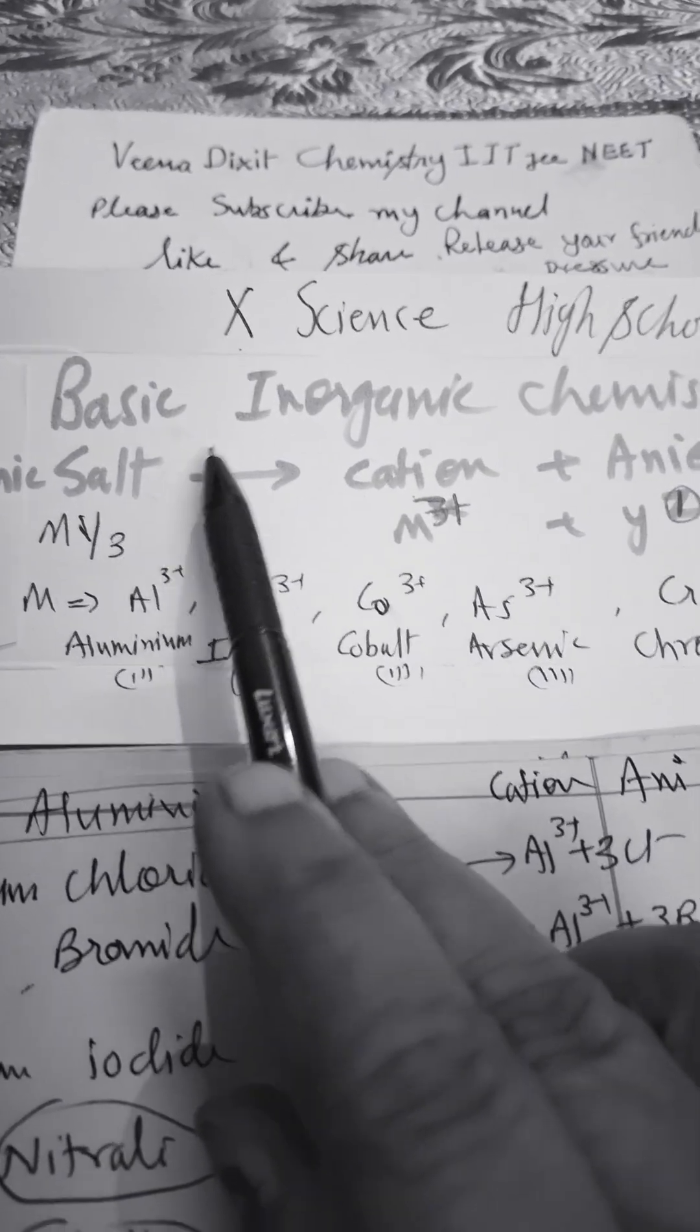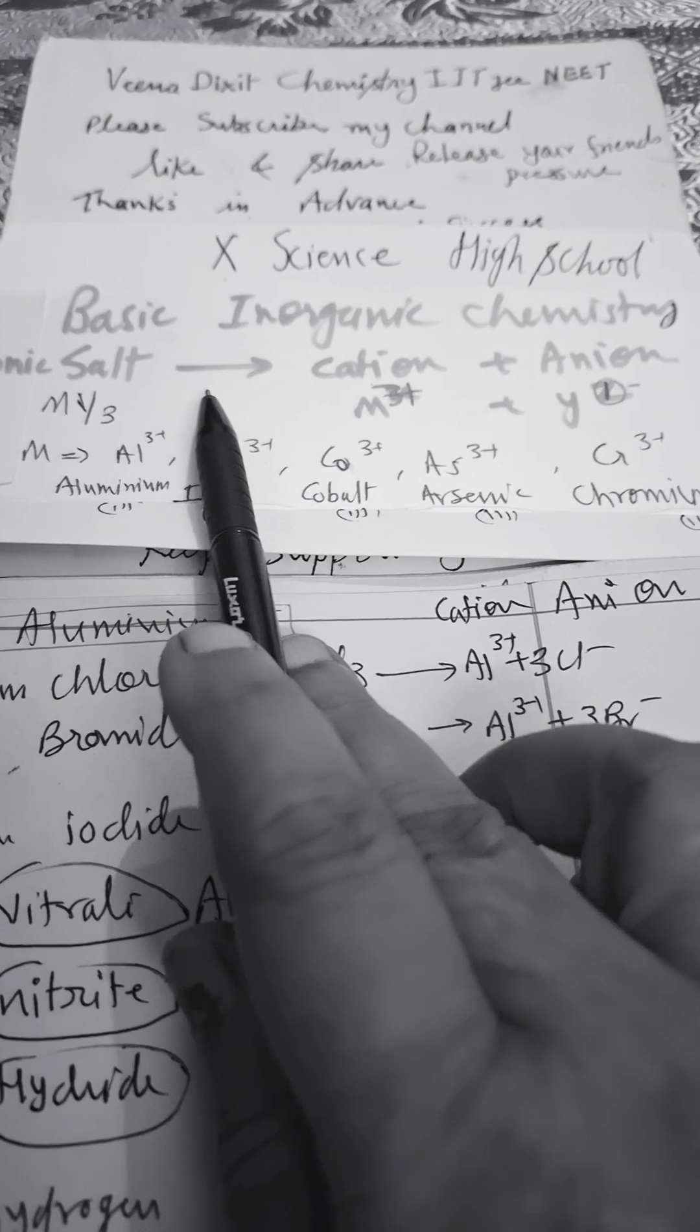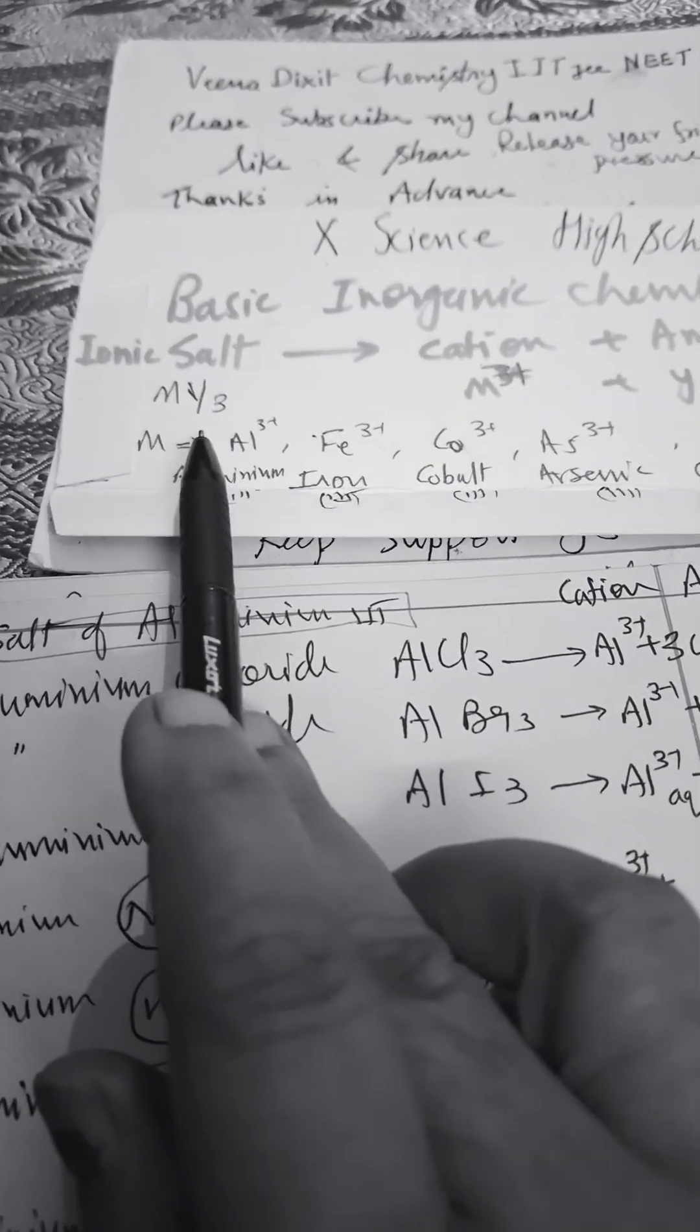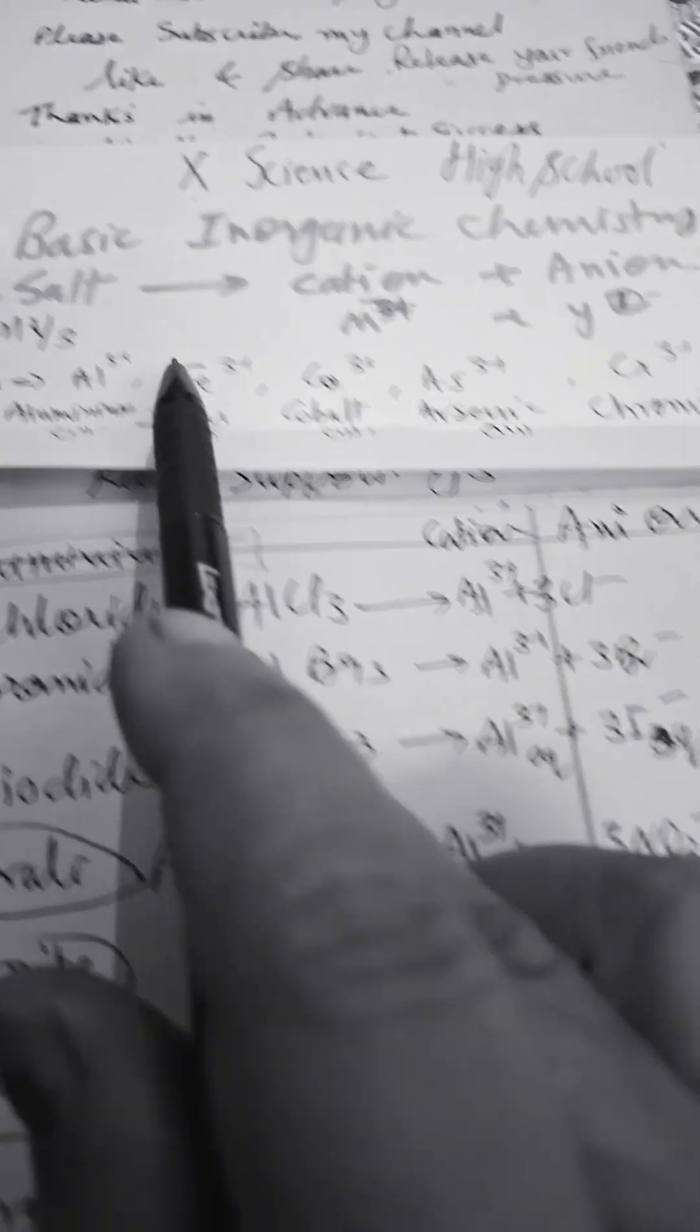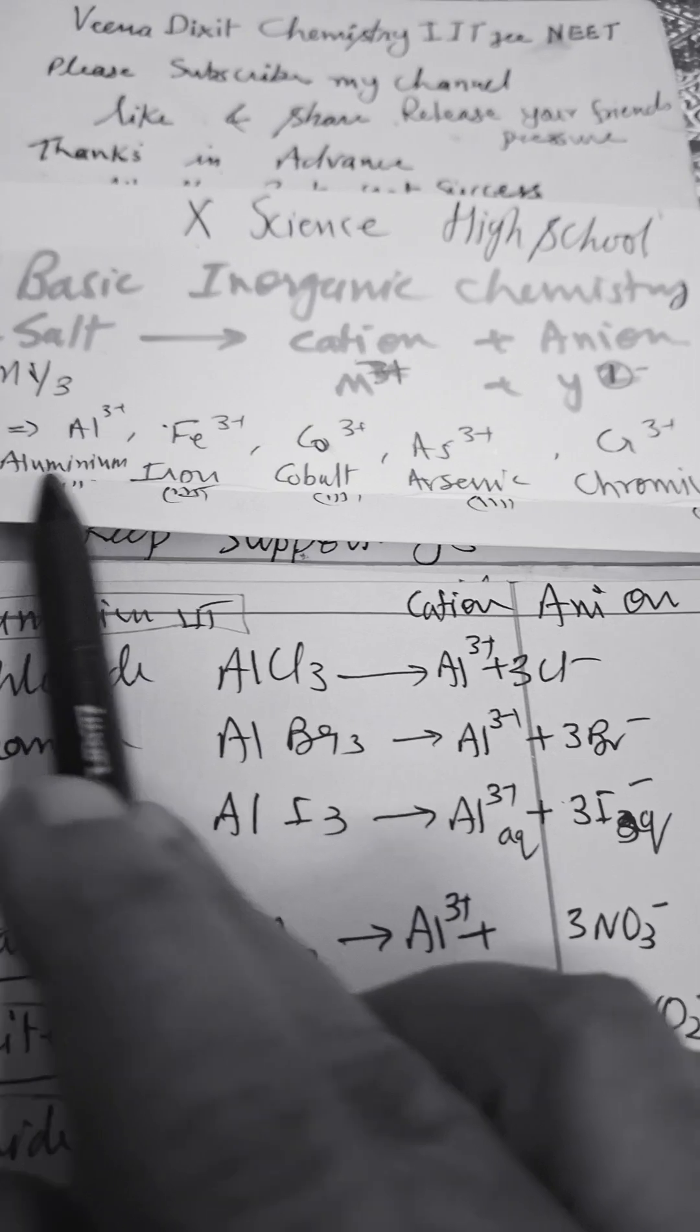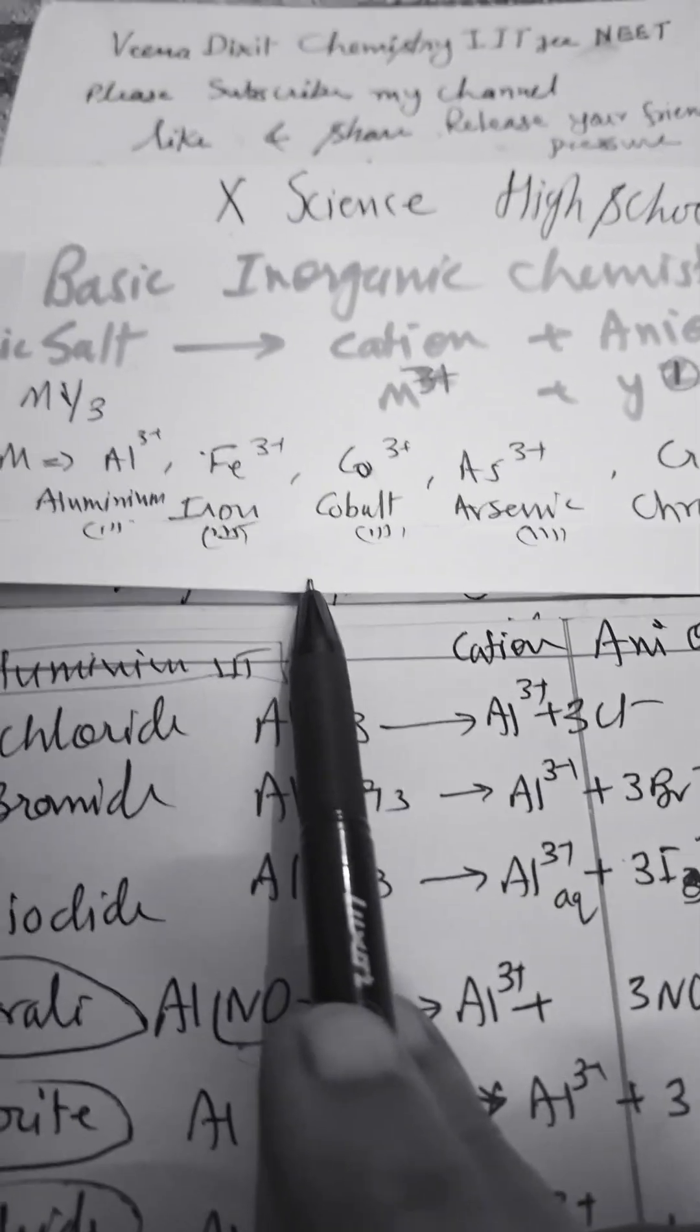Hello students, here we do basic inorganic compound chemistry on ionic salts formed from cations and anions in aqueous medium. We have chosen M³⁺, that is metal ions carrying three positive charges. Examples include aluminum, iron three positive, cobalt, arsenic, and chromium. All of them are having three positive charges. I have written the names, you have to write them down: aluminum, iron, cobalt, arsenic, and chromium.